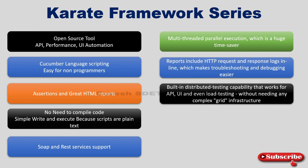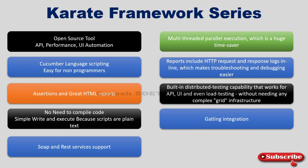Karate has a built-in distributed testing capability that works for API, UI, and even load testing, without needing a grid infrastructure. Grid is used in Selenium for parallel execution across different operating systems or different devices. Karate also has Gatling integration, and Gatling is used for performance testing.